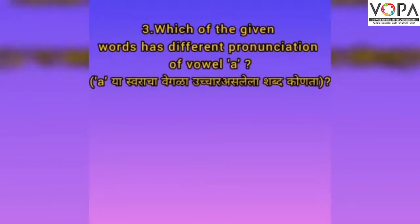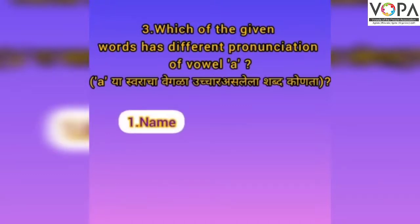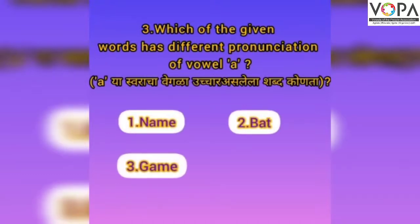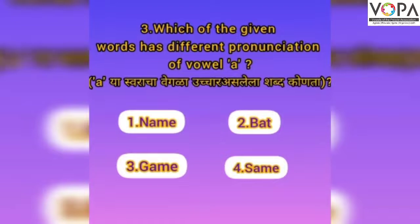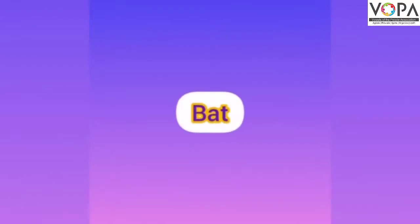Which of the given words has a different pronunciation of the vowel E? The options are name, bat, game, and same. And here you can see the answer is bat.